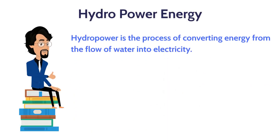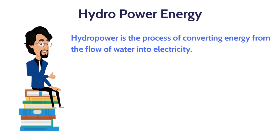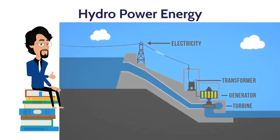Hydropower refers to the generation of power by converting energy from the flow of water into electricity. This is considered renewable energy because the water cycle is constantly renewed by the sun.